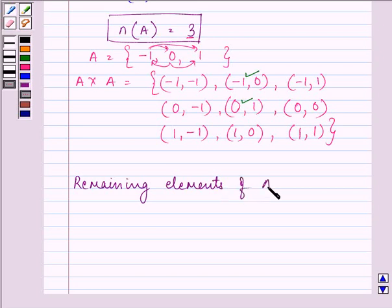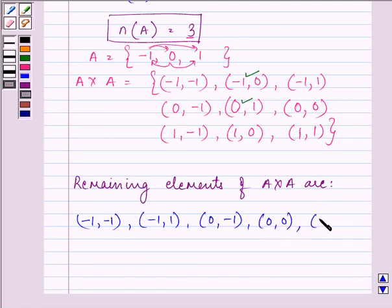The remaining elements of A×A are: (-1, -1), (-1, 1), (0, -1), (0, 0), (1, -1), (1, 0), and (1, 1). That's 7 elements, as 2 were given to us.